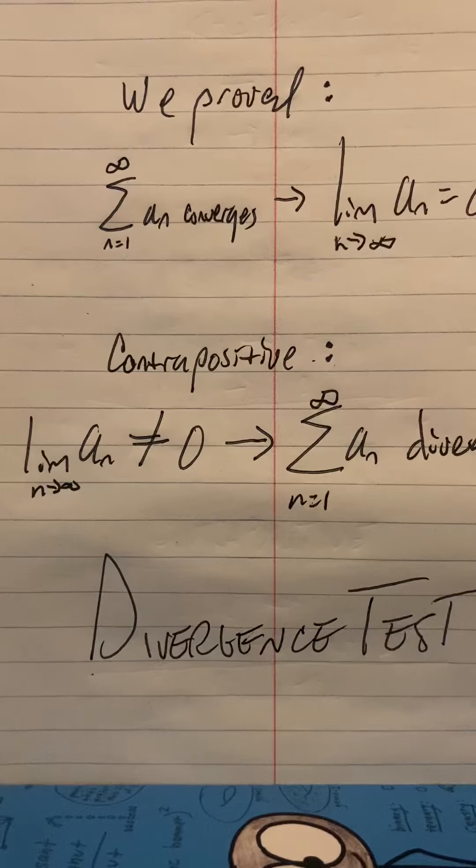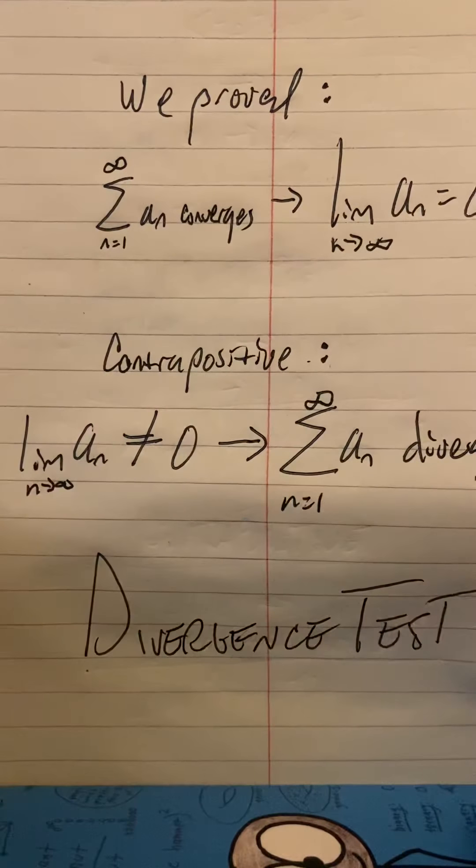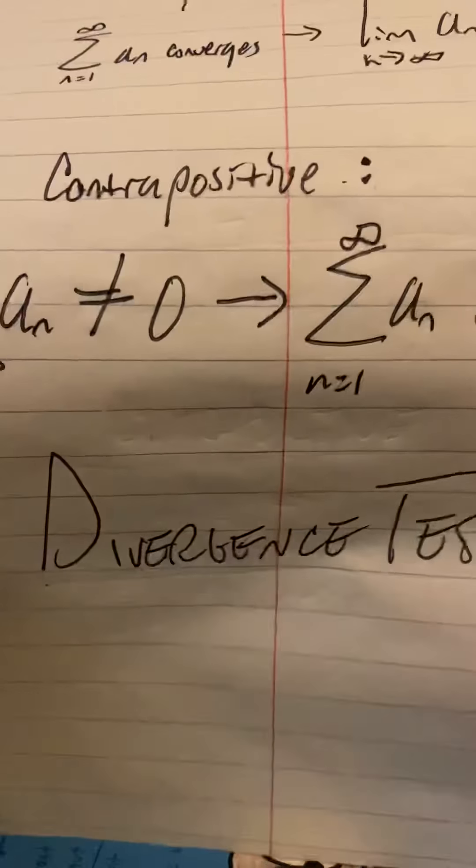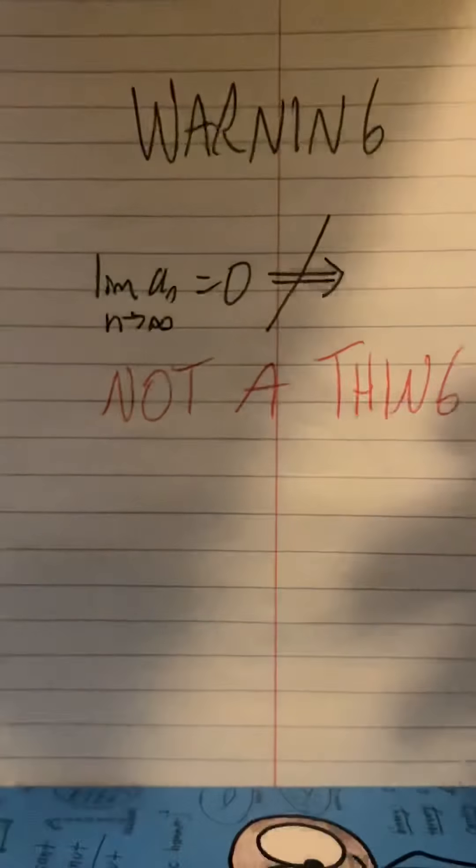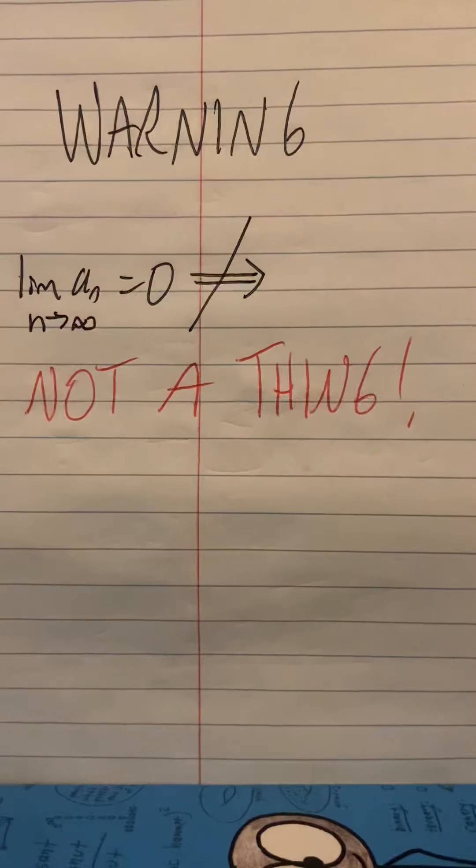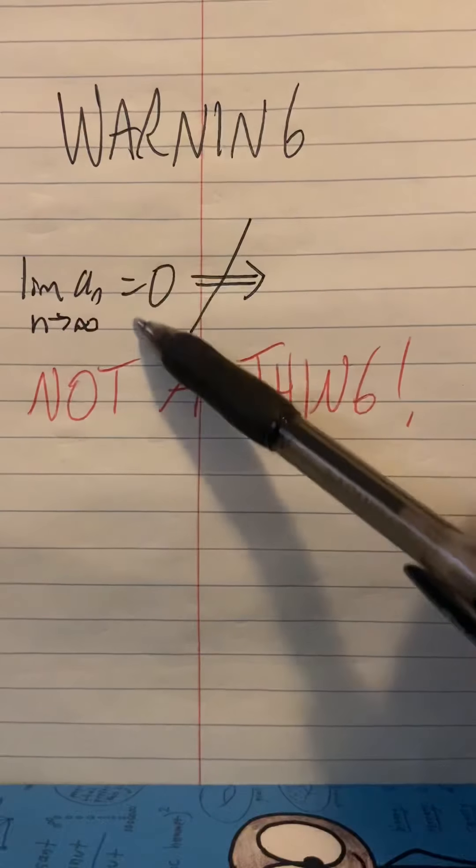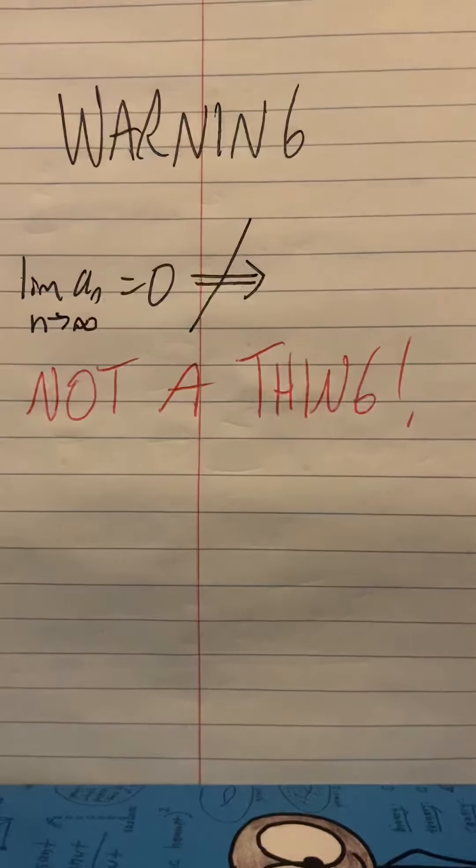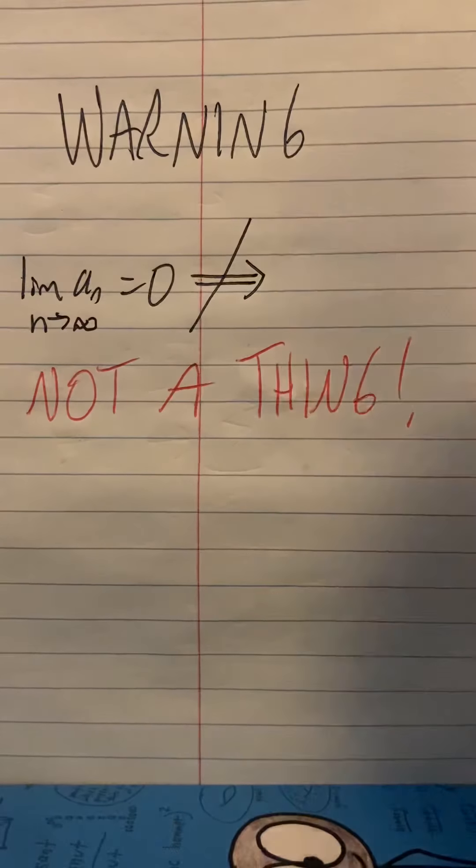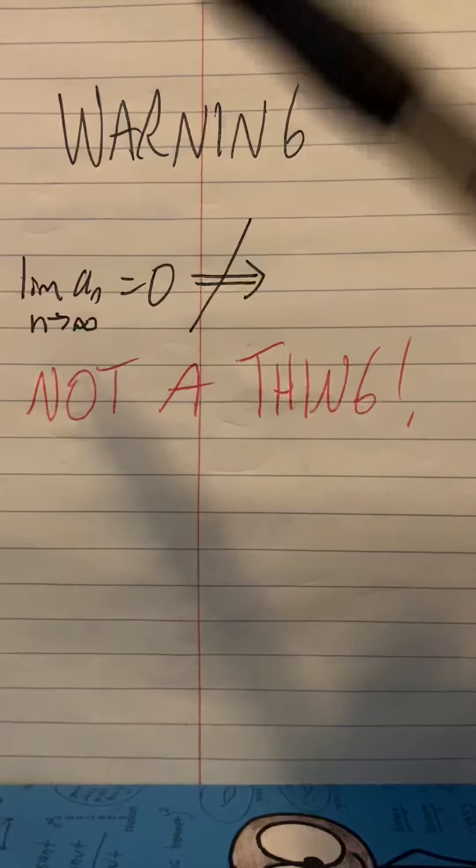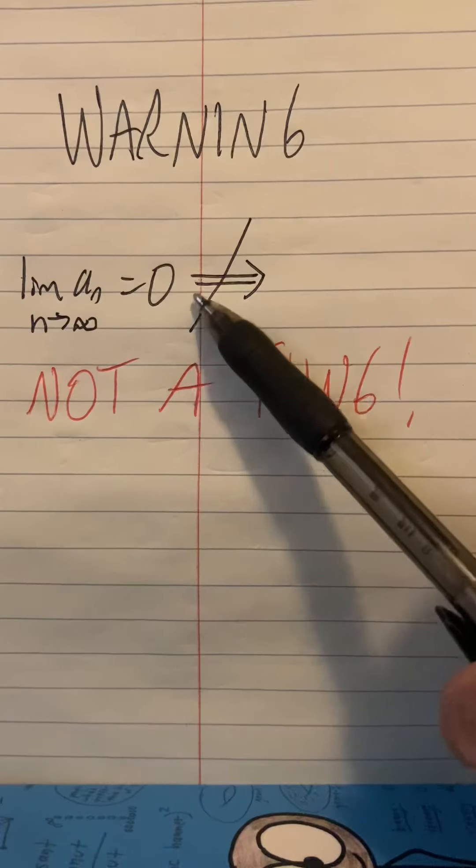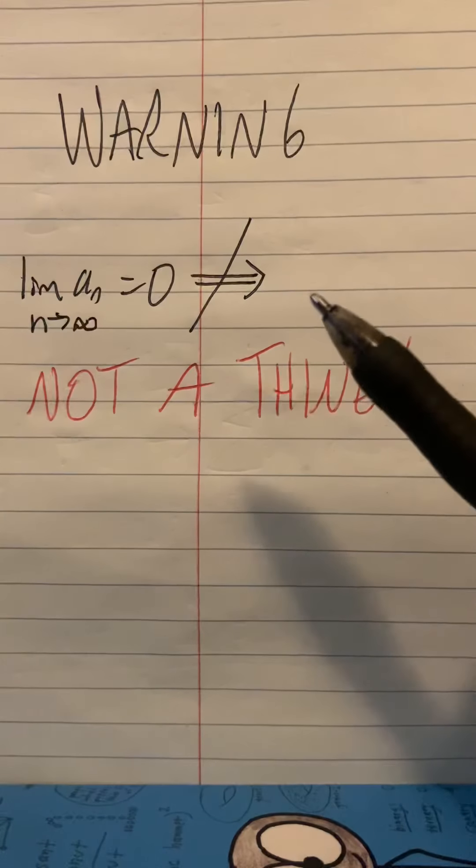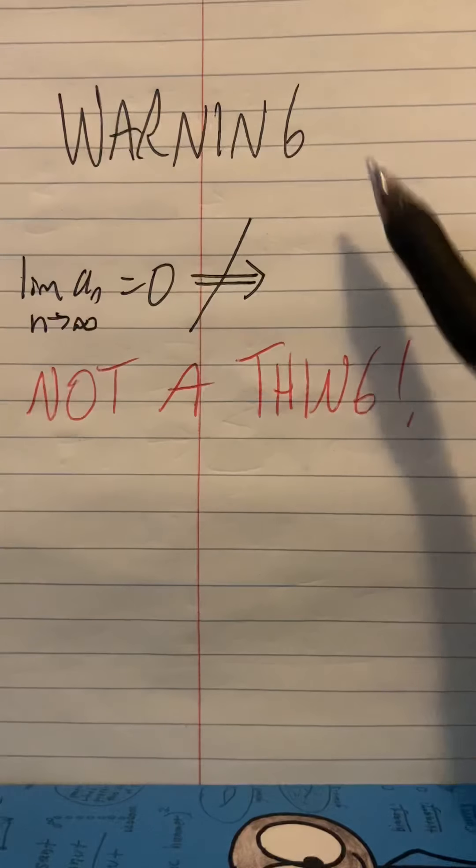Now I must warn you, warning, students make a logic error here. If the limit of the sequence equals zero, well that doesn't imply anything. That's not a thing. If the limit of the sequence equals zero, we haven't learned anything. Now if you knew that a series converges, you'd know that limit is zero.